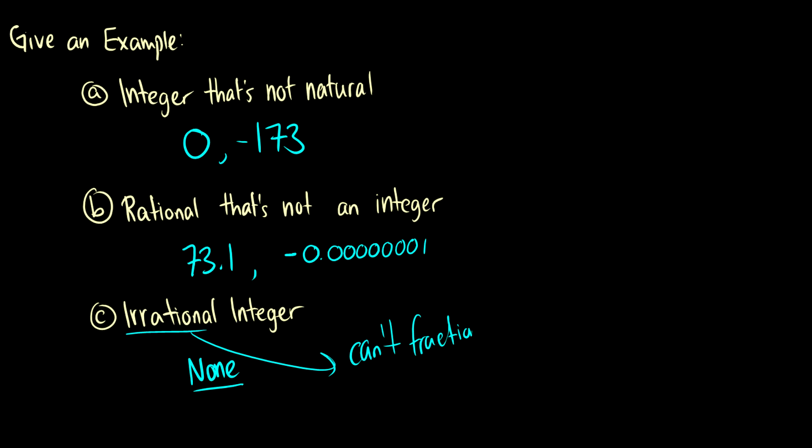Because irrational states that we can't write as a fraction. But an integer is, let's say we have the integer, and this is an abstract variable m, then we can write m as m over 1, which is rational. So you can't have an irrational integer.